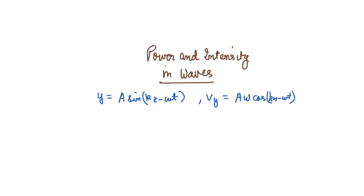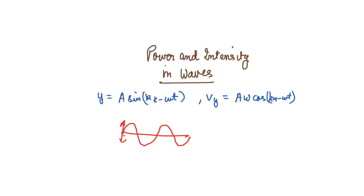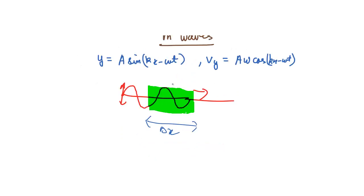Consider a wave going on a string — a simple one-dimensional transverse wave. A source is oscillating in simple harmonic motion, producing a sinusoidal wave on the string. Let's consider a particular segment of the string of length δx.